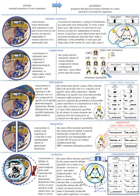Since the existence of the physical substrate is itself only postulated — IIT maintains that the only thing one can be sure of is the existence of one's own consciousness — a physical system is taken to be a set of elements, each with two or more internal states, inputs that influence that state, and outputs that are influenced by that state. Neurons or logic gates are the natural examples.